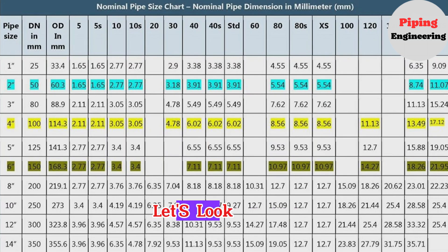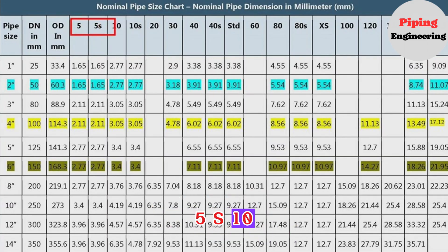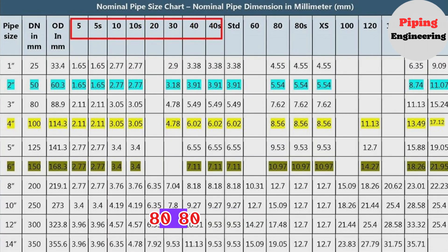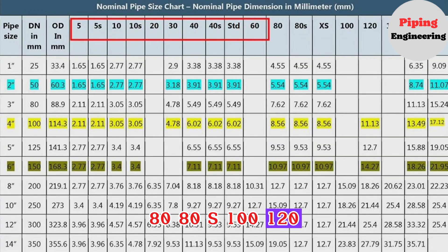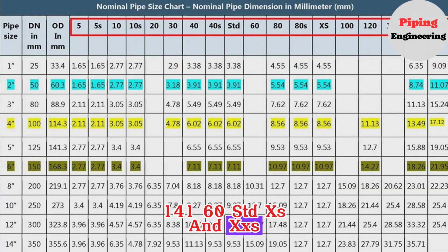Let's look at the pipe dimension chart. In use today are the following pipe schedules: 5, 5S, 10, 10S, 20, 30, 40, 40S, 60, 80, 80S, 100, 120, 140, 160, STD, XS, and XXS.